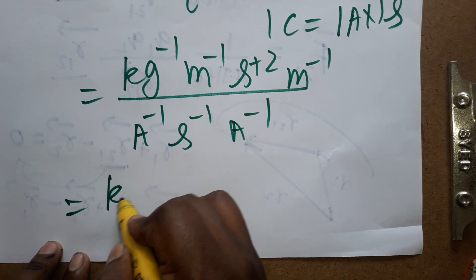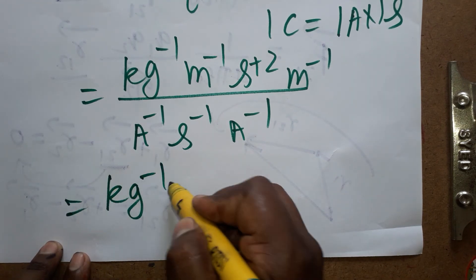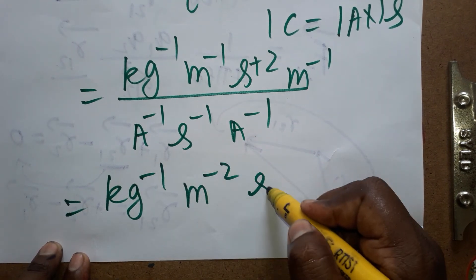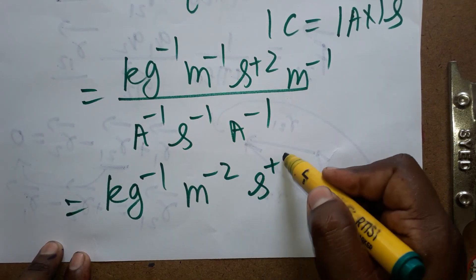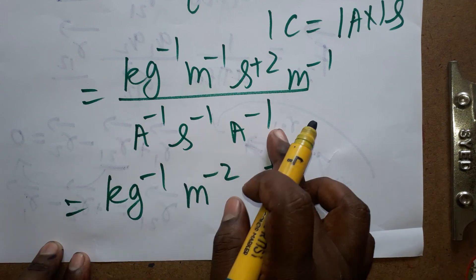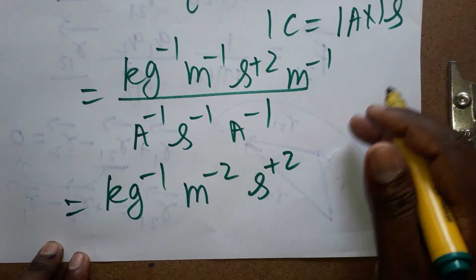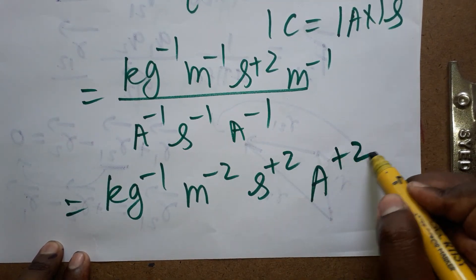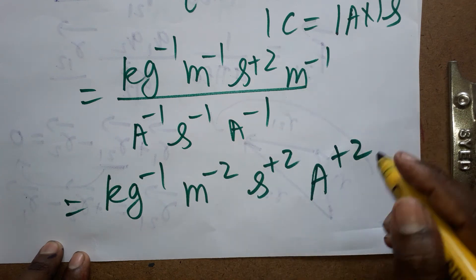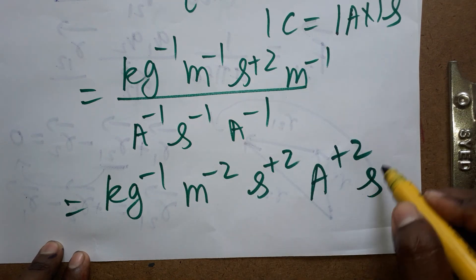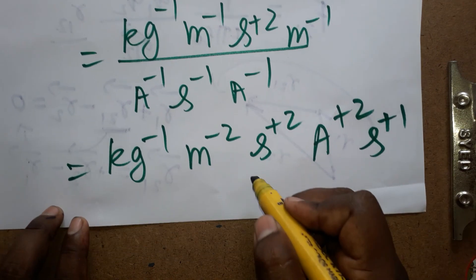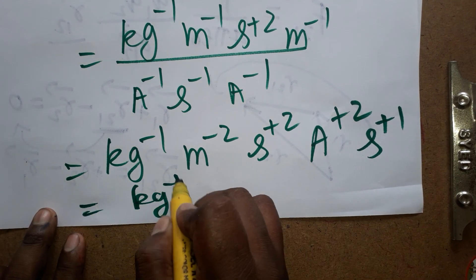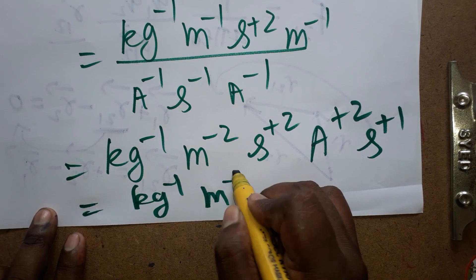Combining all terms: meter inverse times meter inverse gives meter minus two; second plus two times second gives second plus one taken to numerator; ampere inverse times ampere inverse gives ampere minus two taken to numerator as ampere plus two. So the final dimensional formula for conductance is kg⁻¹ m⁻² s³ A² (M⁻¹ L⁻² T³ A²).